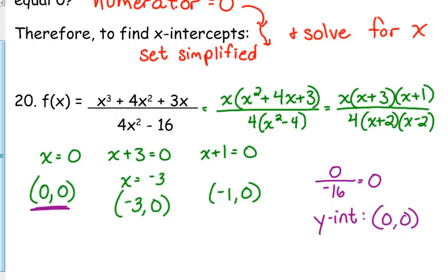But if that were not the case, you would plug in 0 for all your x's. Sometimes it's easier to do that in the simplified version. Sometimes it's easier to do it in the original. It does not matter. You should get the same answer for your y-intercept, regardless.